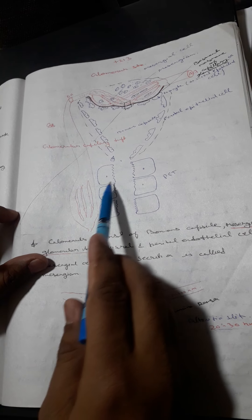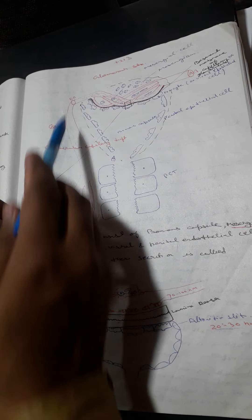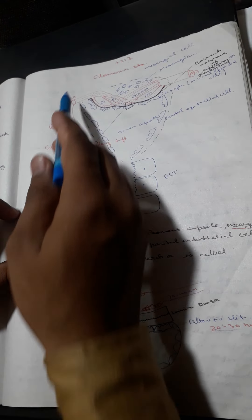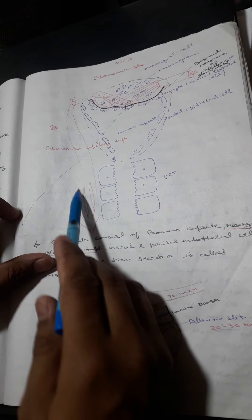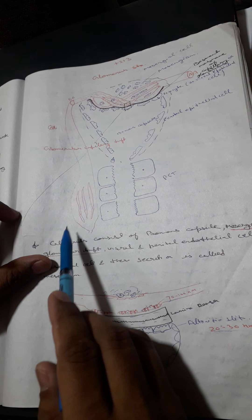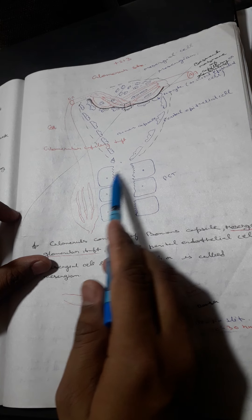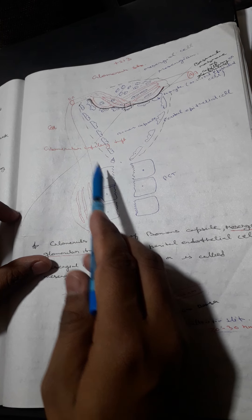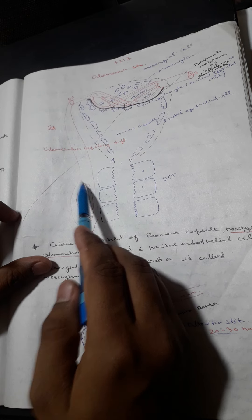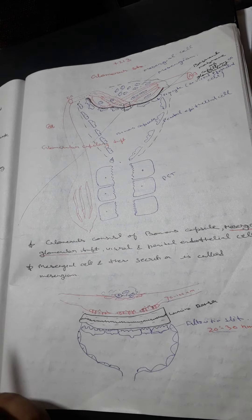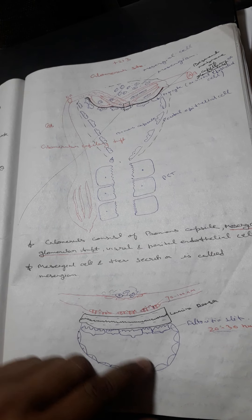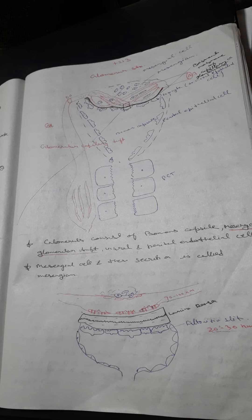The efferent arterioles further go and near the PCT they form the peritubular capillaries. When absorption occurs by the PCT cells, substances move into the interstitial fluid and then into the peritubular capillaries. This concludes the overview of the peritubular capillaries and glomerular structure.